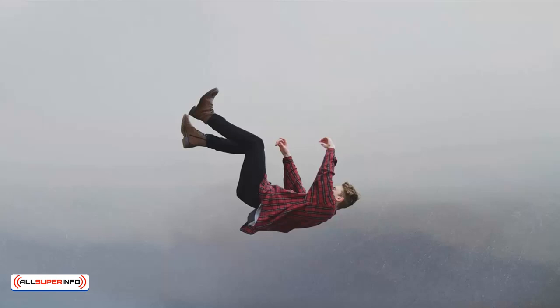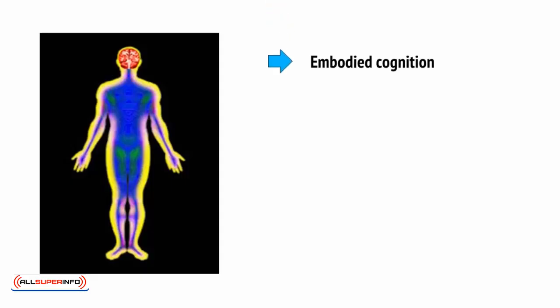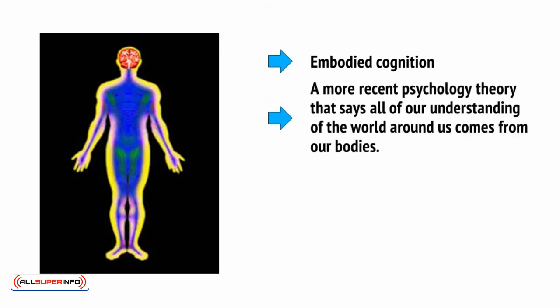Now, hold that concept in your mind for a moment while we take a look at another concept. This one is called embodied cognition. Embodied cognition is a more recent psychology theory that says all of our understanding of the world around us comes from our bodies.